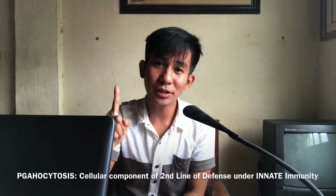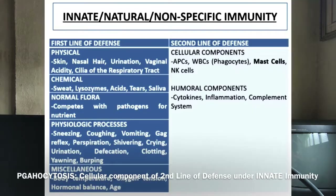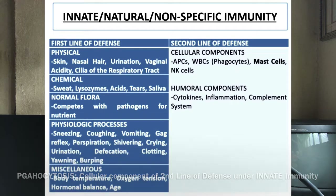Before we proceed to the main discussion, there are four pointers I would like to impart. First, phagocytosis is a cellular component of your second line of defense under innate, natural, or non-specific immunity.